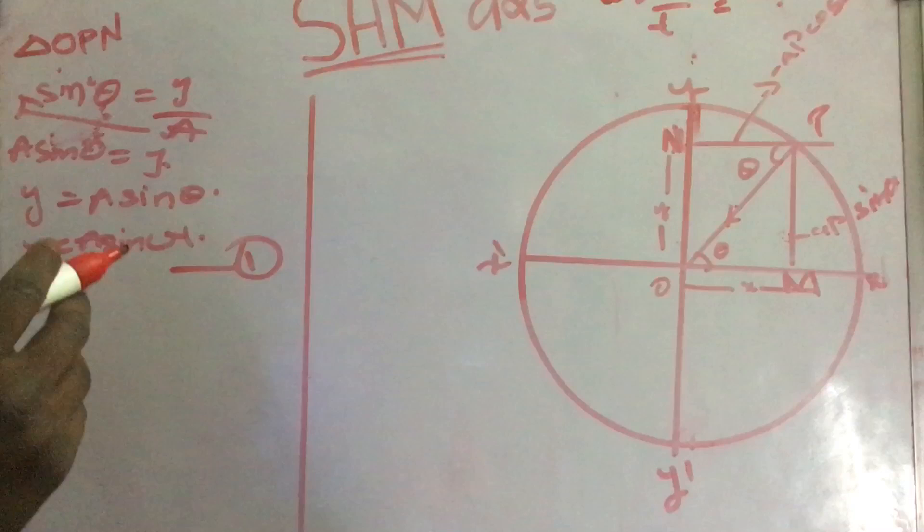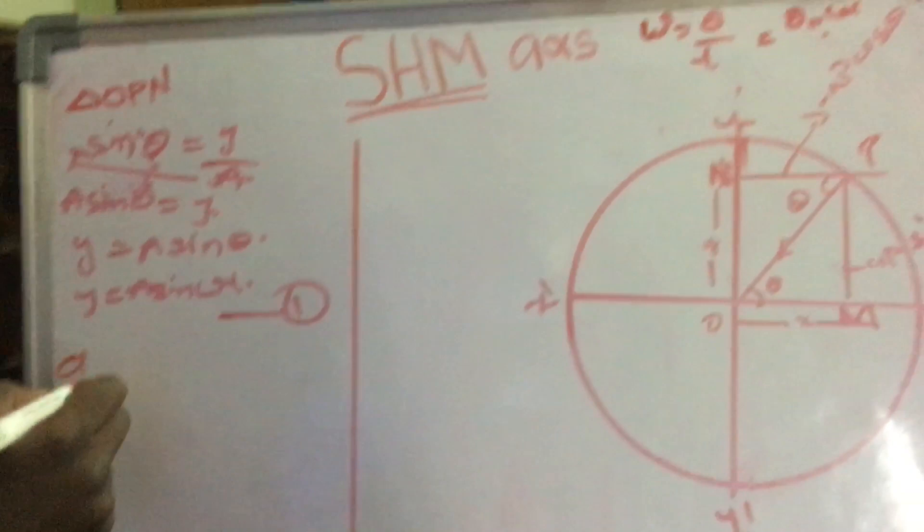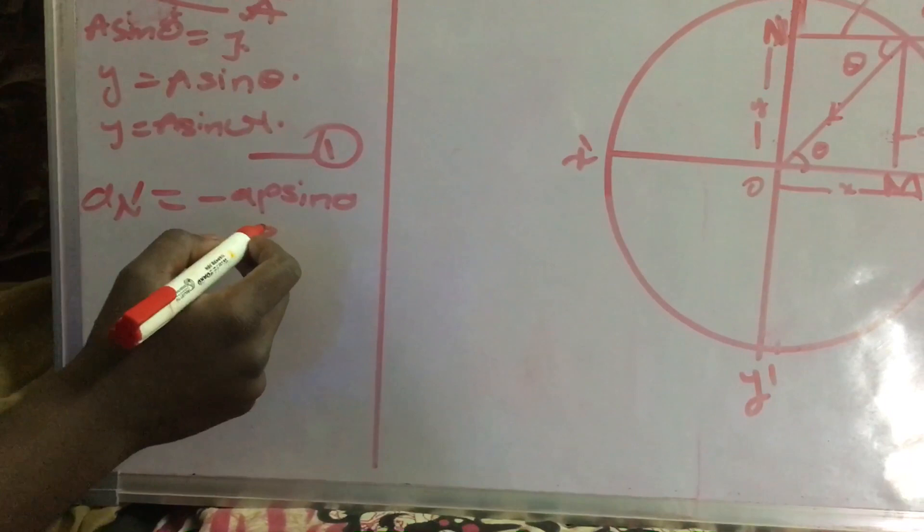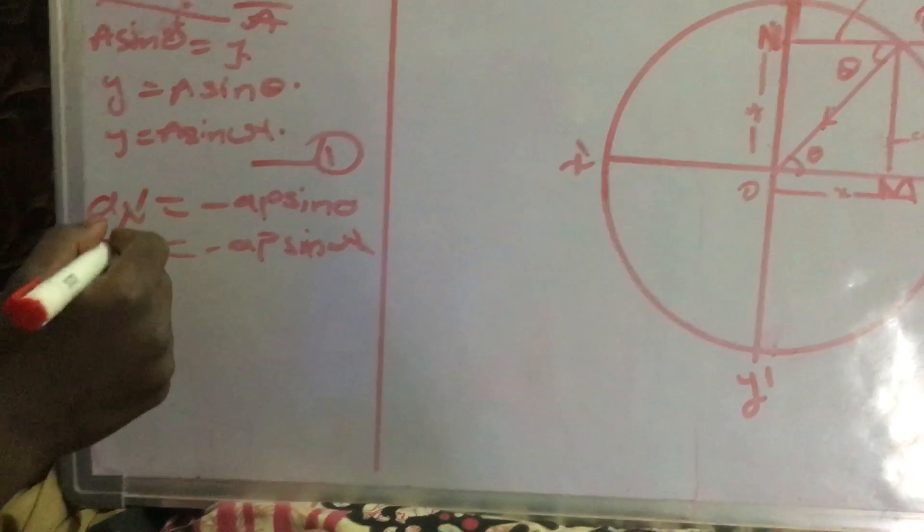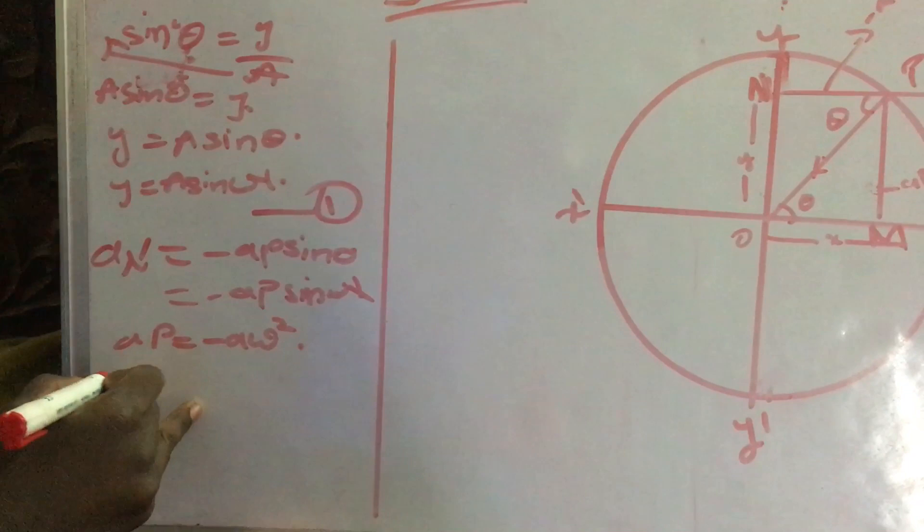In this second equation, acceleration is directly parallel to ON. AN is equal to minus AP sin theta. Now I am substituting the value of sin theta, minus AP sin omega t. Minus AP sin omega t is equal to minus A omega square.